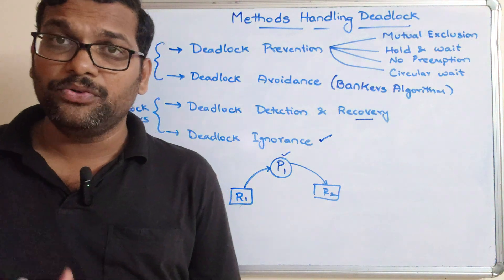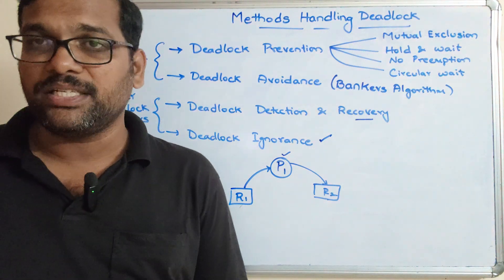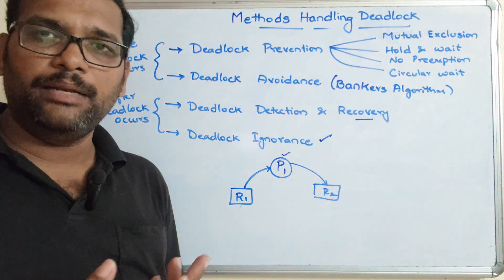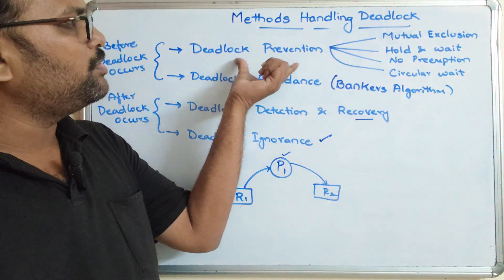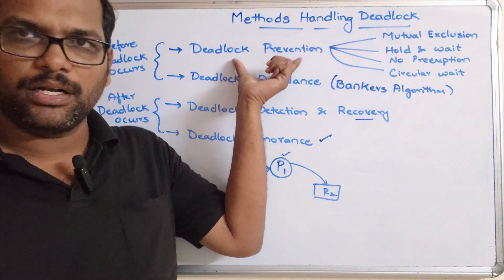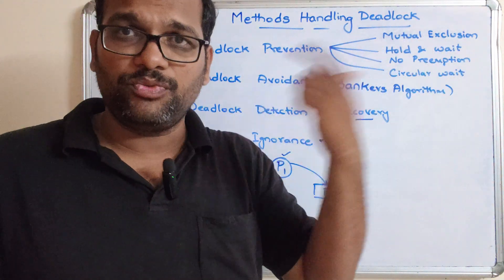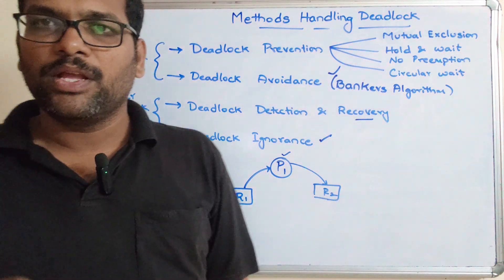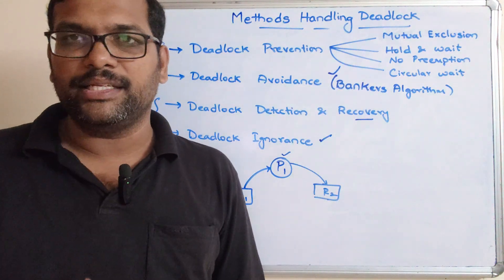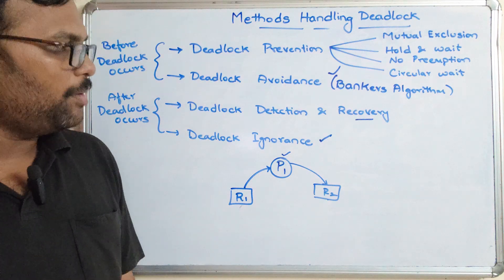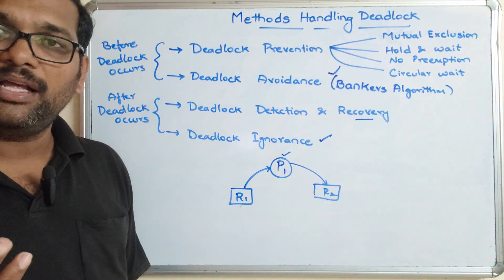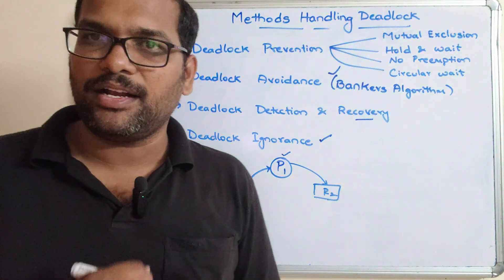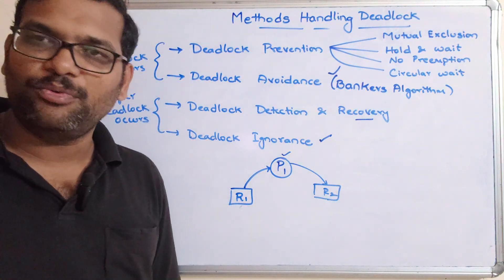So these are the different methods used to handle the deadlock situation. In our next session we'll go in depth with each one. We have already discussed deadlock prevention conditions in a previous session, and next we'll go with the Banker's Algorithm for deadlock avoidance. If you enjoyed this session, please like, share with your friends, and don't forget to subscribe. Thanks for watching!